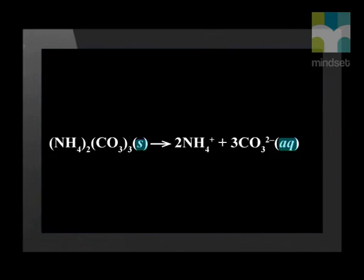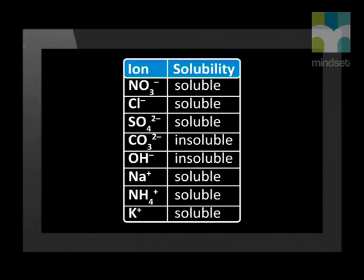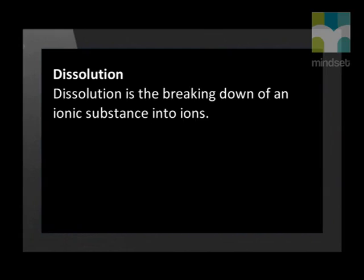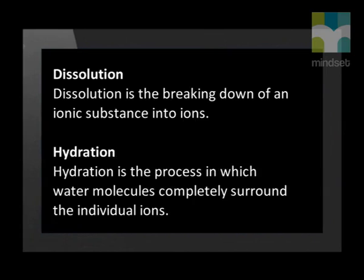To help us in this section, there is a set of rules called the solubility rules. They tell us which ionic substances are soluble in water. You can see the solubility of some substances in this table. There are a few exceptions to these solubilities, which you can look up if you need them — you do not need to memorize these details. To recap: dissolution is the breaking down of an ionic substance into ions; hydration is the process in which water molecules completely surround the individual ions. We also learned how to represent the dissolution process using balanced chemical equations, and we introduced a solubility table to help determine which substances are soluble in water.